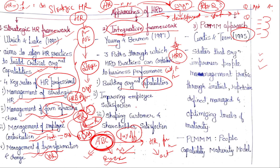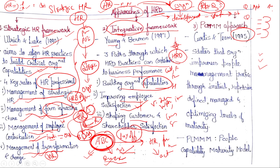Right from the culture of the organization, policies, and structure, everything needs to work towards development. According to this approach, there are three paths through which HRD practices can contribute to business performance. First is building organizational capabilities, which requires developing human resources. Second is improving employee satisfaction — if an employee is satisfied, productivity is automatically high — through participation, involvement, proper compensation, and proper motivation. Third is shaping customer and shareholder satisfaction. Nowadays, a company is known not just by its product but by customer and shareholder satisfaction. Shaping the customer means identifying customers, creating the need for them, and distributing it.